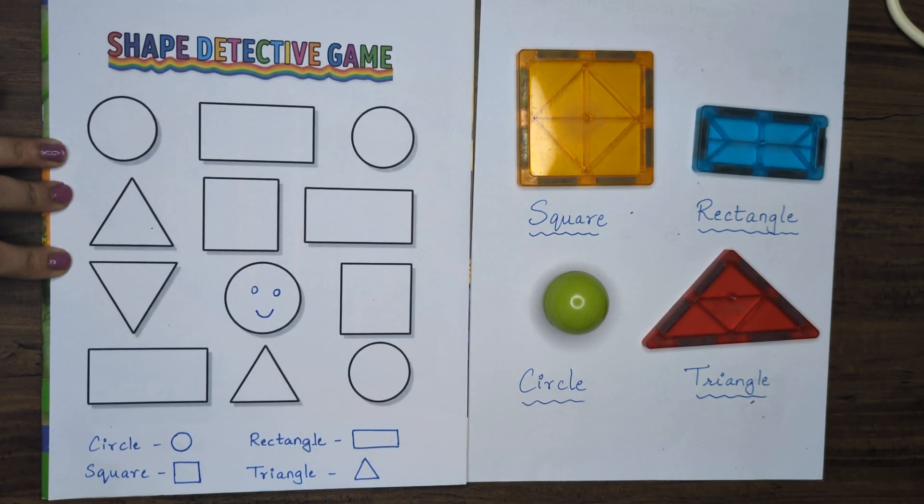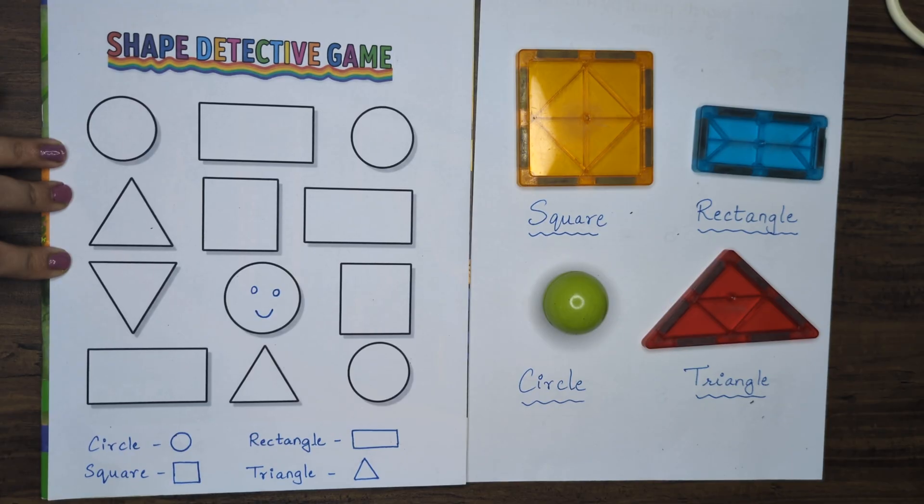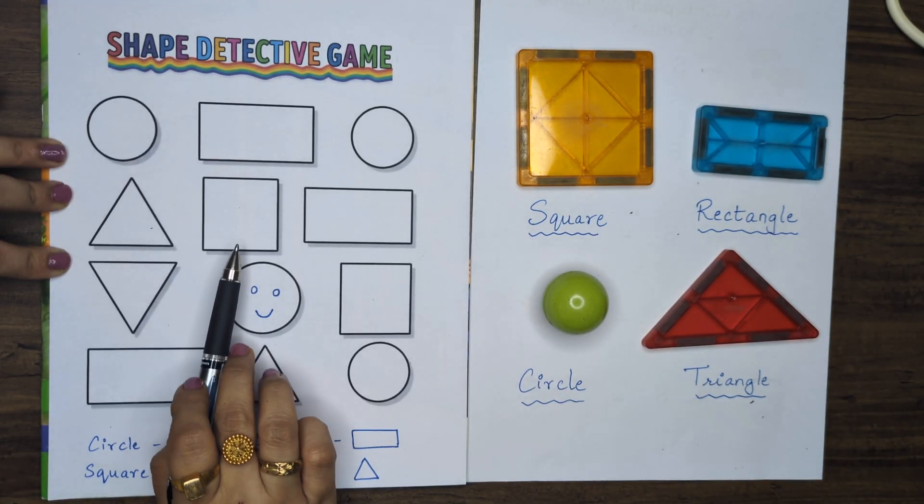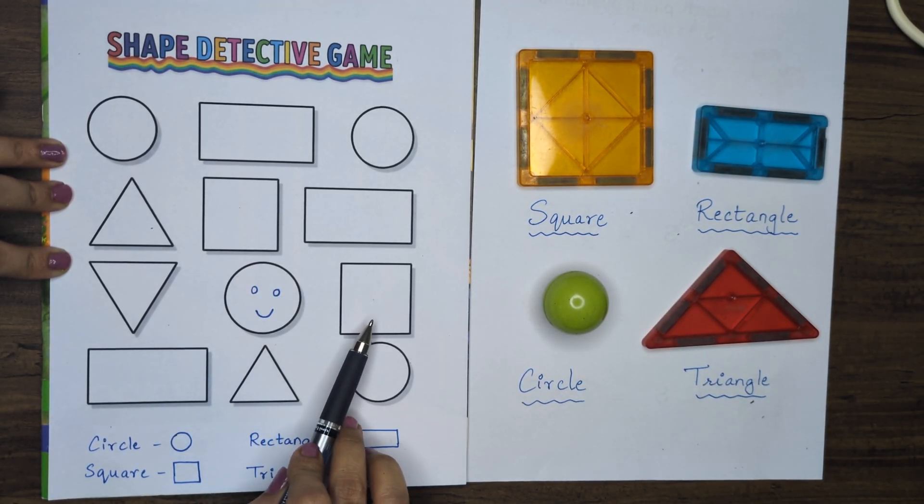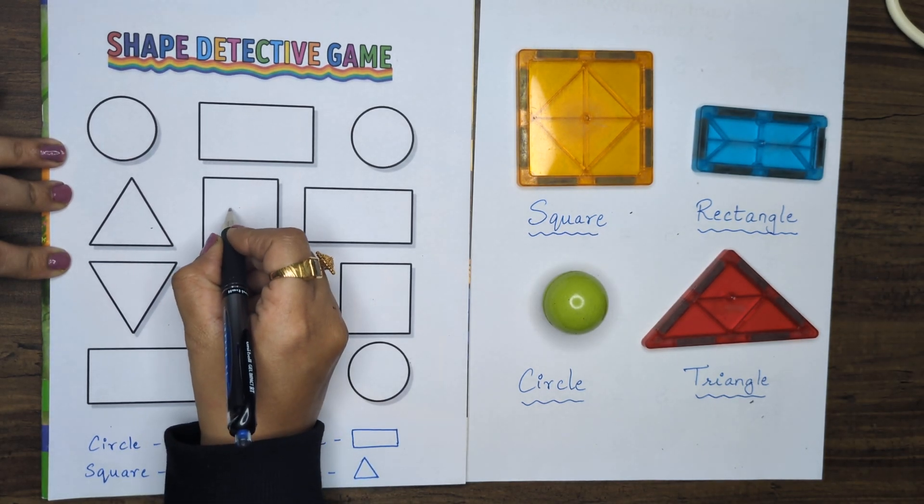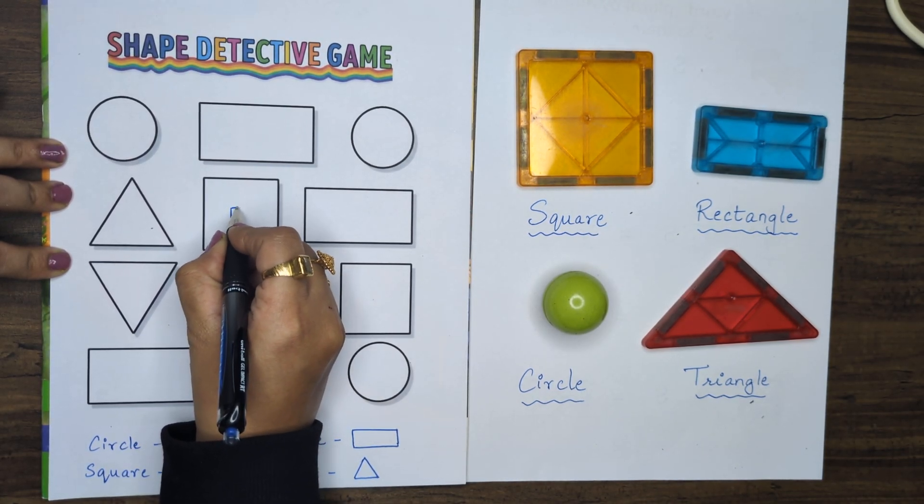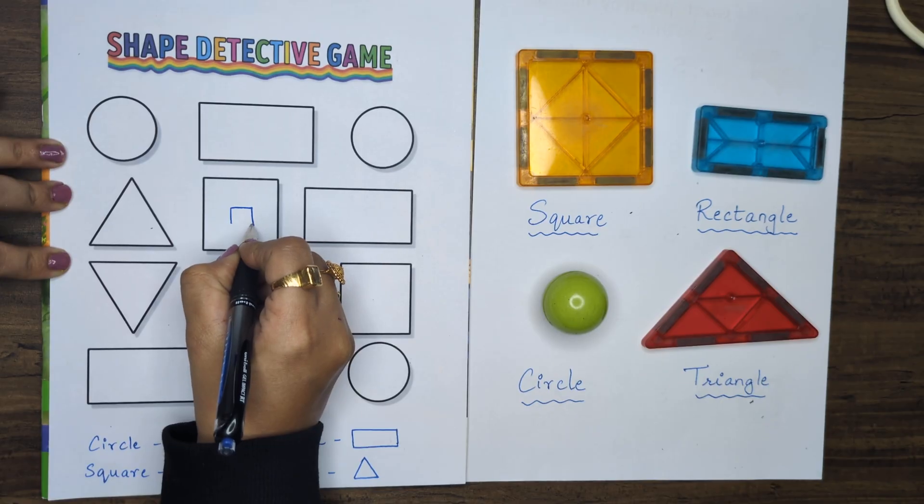Draw small squares inside all the squares. Let me find out the squares first. I can see 1 and 2. Now what I have to draw? I have to draw small squares inside the squares.